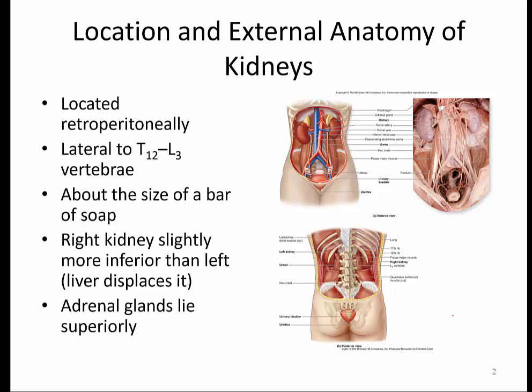The kidneys are found roughly at the levels of T12 through L3. They are about the size of your fist or a bar of soap. They are found retroperitoneally, which means they're behind the peritoneal cavity. When you dissected the kidneys on your cats, you had to cut through the peritoneum on the back wall to pop the kidneys out before you could see the renal artery and renal veins. They are not at the same level, because the liver displaces the right kidney slightly inferiorly.